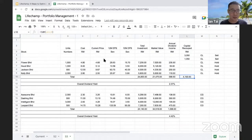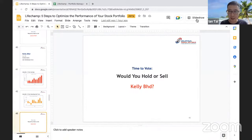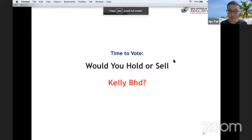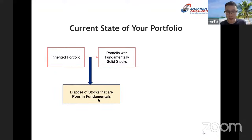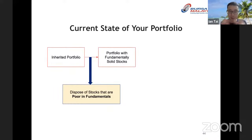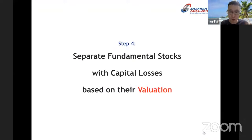Let's go back to the slides and start another round of buy, hold, or sell. This is the current state of your portfolio. Once you've inherited a portfolio, the first step is to get rid of anything that is poor in terms of fundamentals. Then your portfolio is filled only with fundamentally solid stocks. That is steps one, two, and three. Now we move on to step number four.